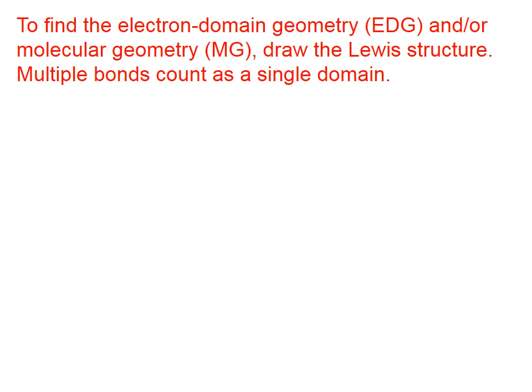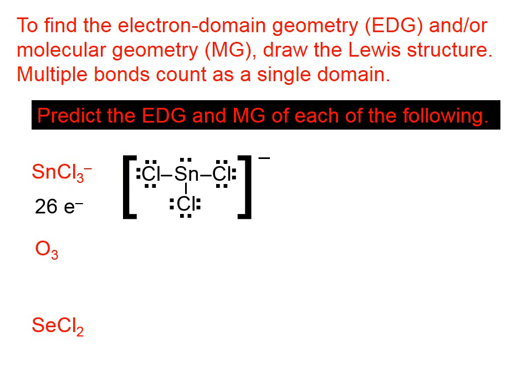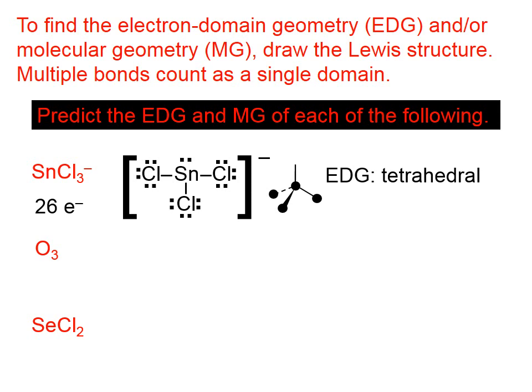To find the electron domain geometry and molecular geometry, draw the Lewis structure. Multiple bonds count as a single domain. Our purpose here is to look at the central atom and count how many electron domains there are around it. In this case, there are four, so the electron domain geometry is tetrahedral. Three of those domains are bonding domains, which means the molecular geometry is trigonal pyramidal.